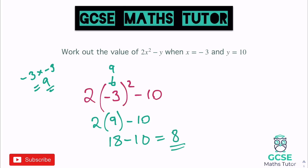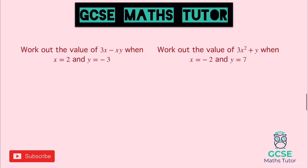Be very careful: it's 2 lots of the value of negative 3 squared, which is 9, so it's 2 lots of 9. Now pause the video and have a go at the next questions.